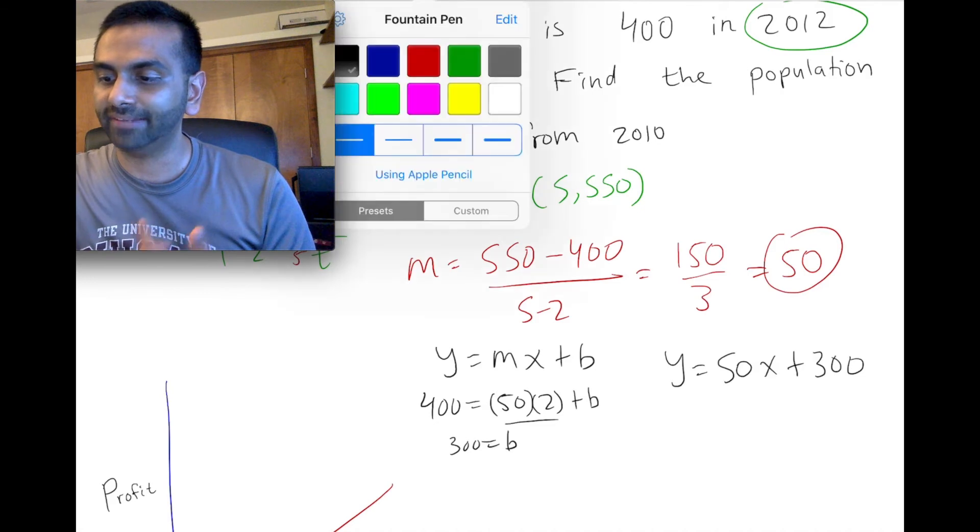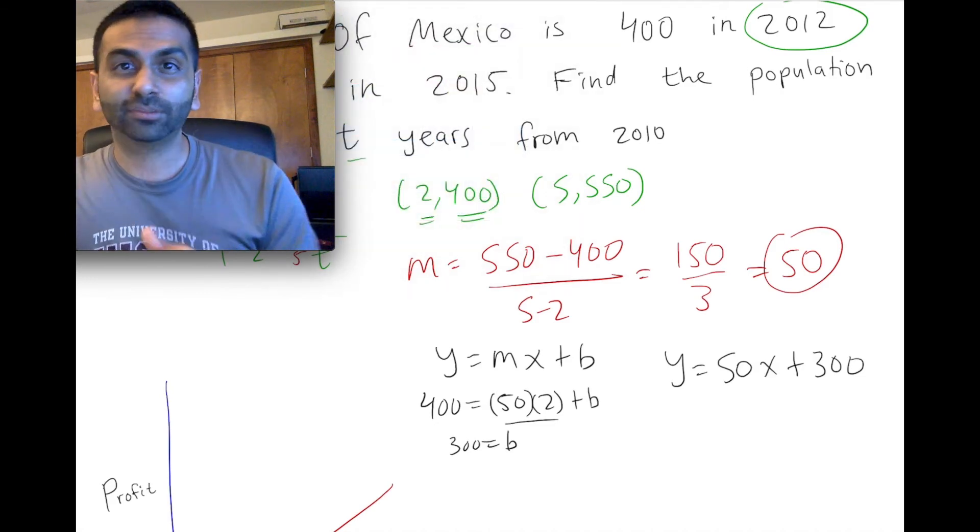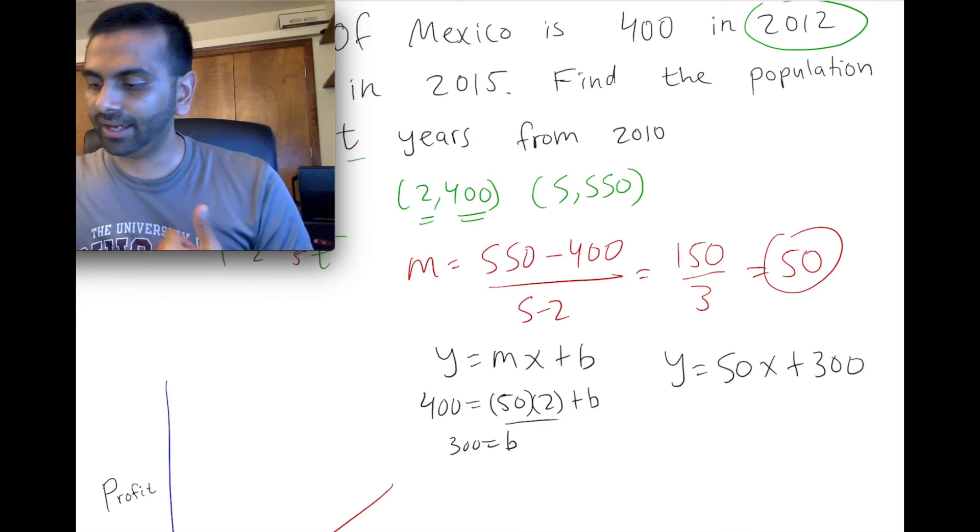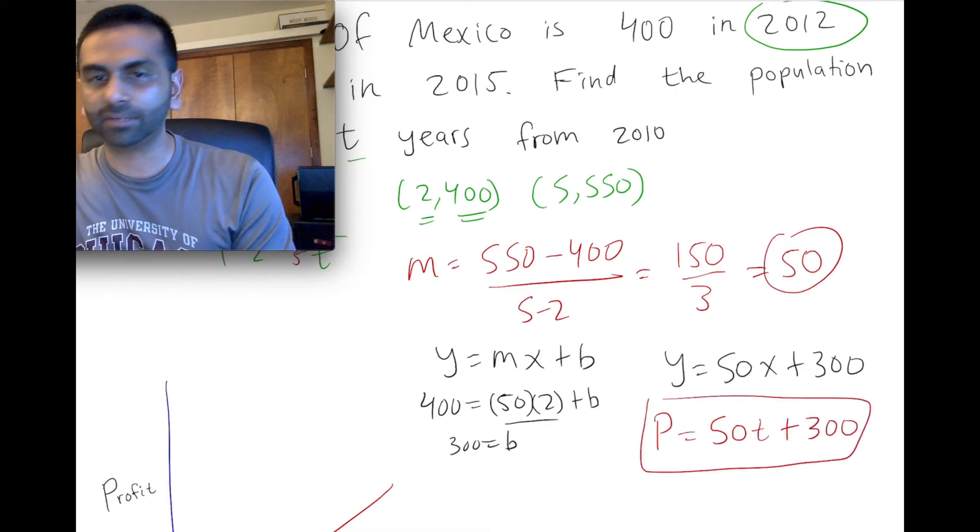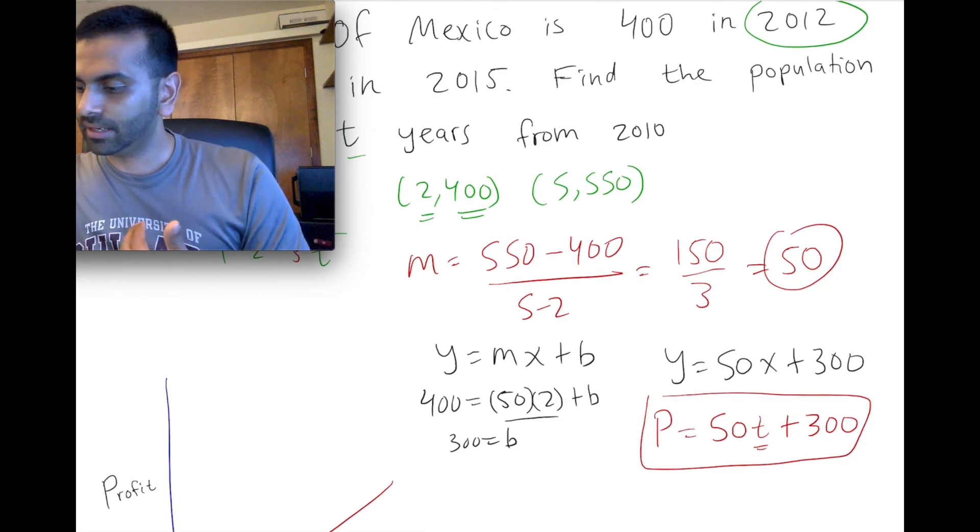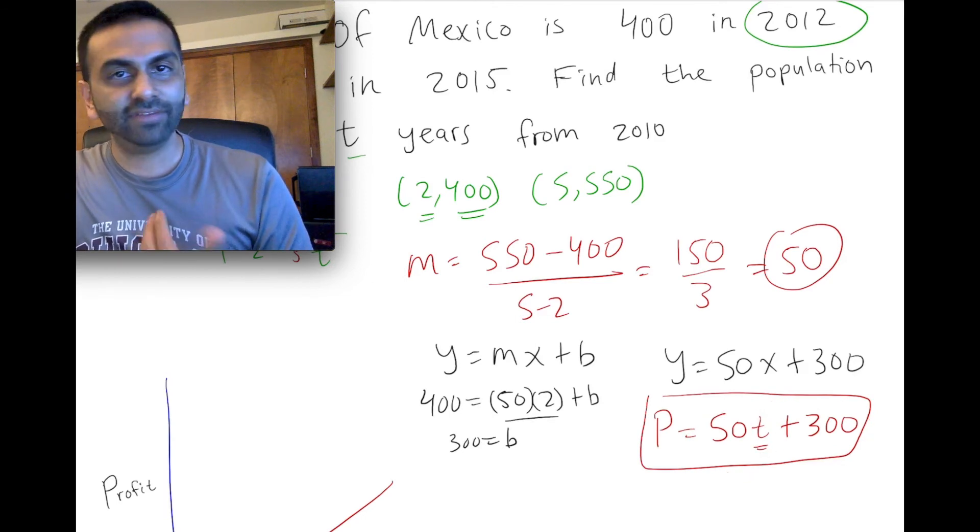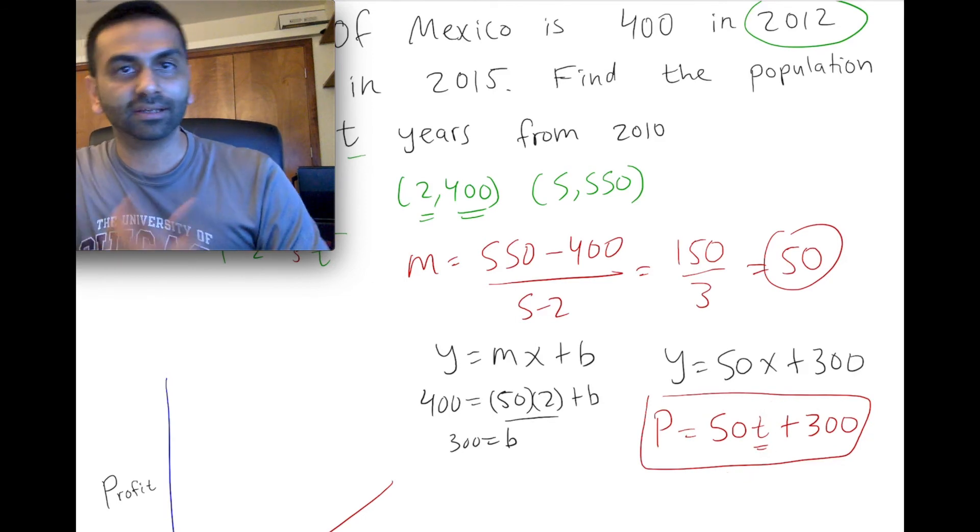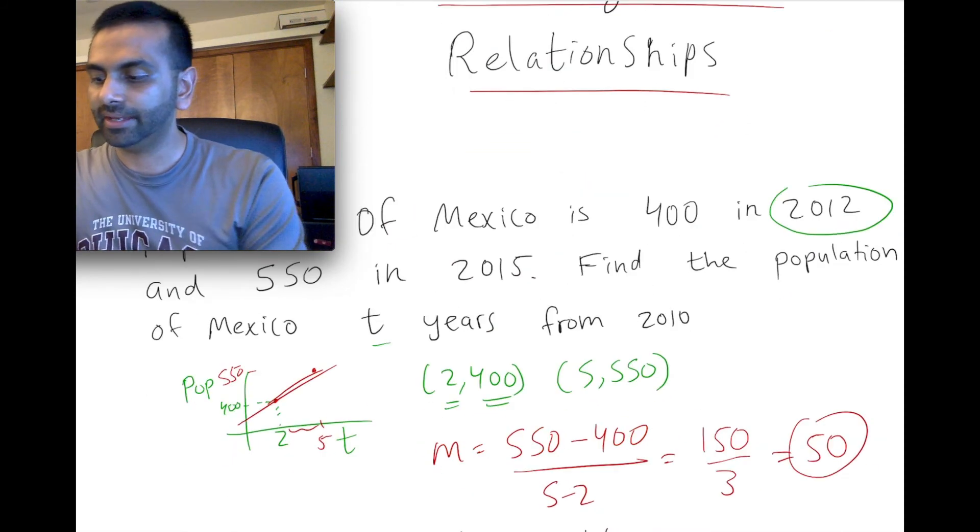But again, if we're reporting the answer, we should be careful, because the variable here wasn't called X, it was called T. So you'd say our population P was 50T plus 300. And again, you can kind of verify your answer that this worked, because, you know, plug in T equals 2, and you'll get 400. Plug in T equals 5, and you'll get 550. And so you know that you did it correctly, because that situation described earlier is represented in our line.